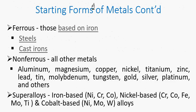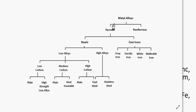We also need to understand the difference between ferrous and non-ferrous metals. Ferrous metals contain iron, while non-ferrous are all other metals apart from iron. Ferrous metals can be steel or cast iron. Under cast iron, there are four types: grey, ductile, white, and malleable. Steel can be low or high alloy steel with further subgroups.